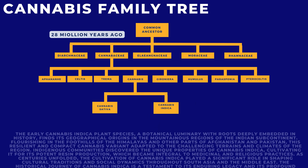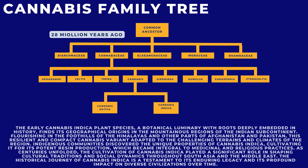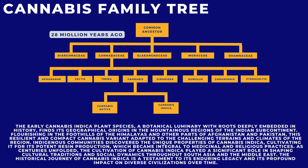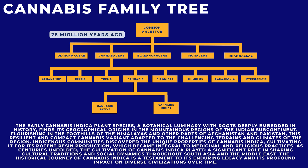The early Cannabis indica plant species, a botanical luminary with roots deeply embedded in history, finds its geographical origins in the mountainous regions of the Indian subcontinent. Flourishing in the foothills of the Himalayas and other parts of Afghanistan and Pakistan, this resilient and compact cannabis variant adapted to the challenging terrains and climates of the region.